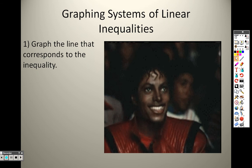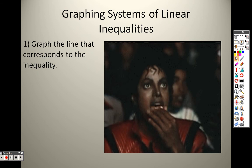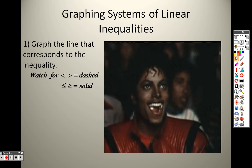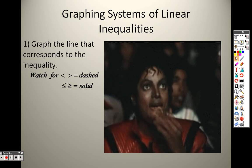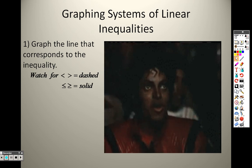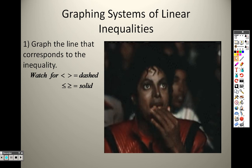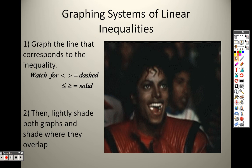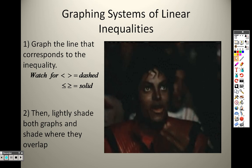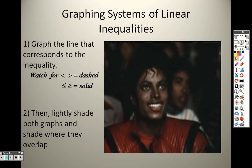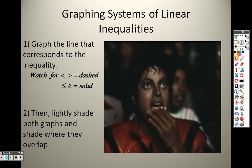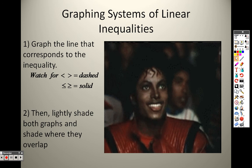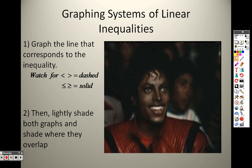Graphing systems of linear inequalities. To do that, you graph the line that corresponds to the inequality. And remember, this is stuff from Chapter 2 again. If it's less than or greater than sign, it is a dashed line, and if it's less than or equal to or greater than or equal to, it is a solid line. Then you lightly shade both graphs. So you just graph the first line, you shade it. You graph the second line, you shade it. Wherever the two graphs overlap, that is your answer.